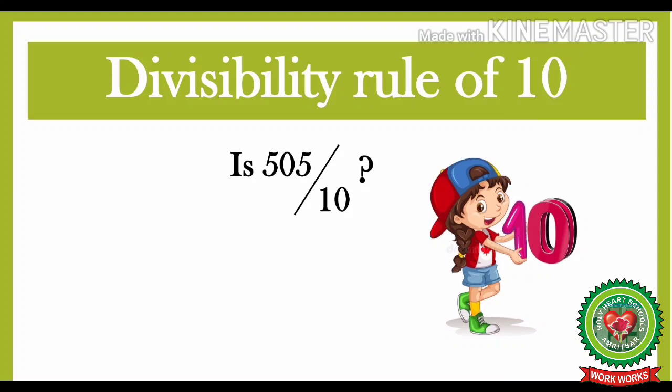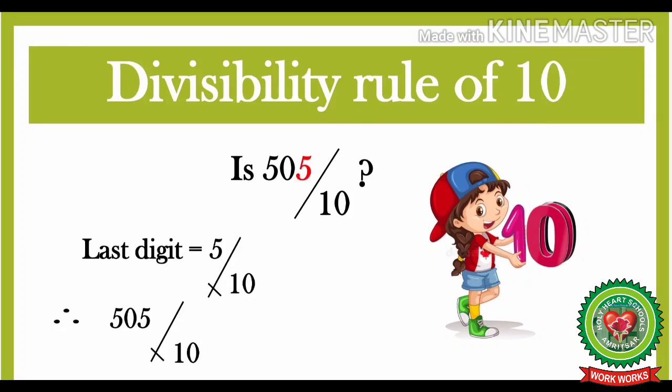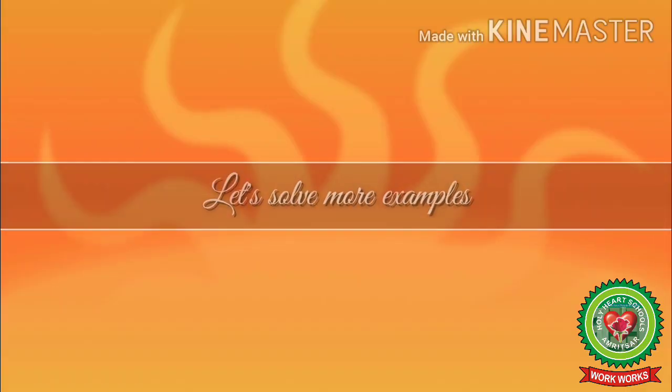Is 505 divisible by 10? Let us look at the last digit — that is 5. The rule says if the last digit is 0, then the whole number is divisible by 10. Since the last digit here is not 0, it is 5, which is not divisible by 10. Therefore, 505 is not divisible by 10.